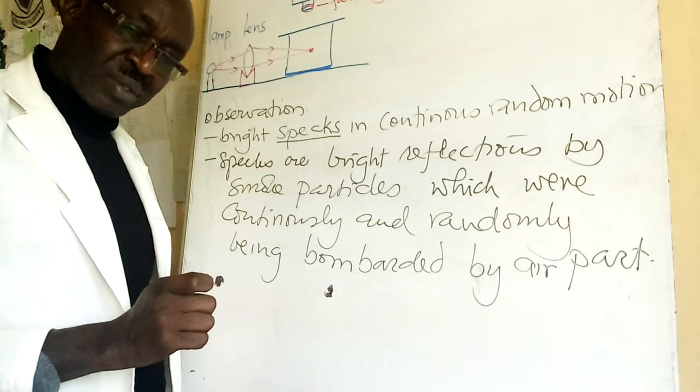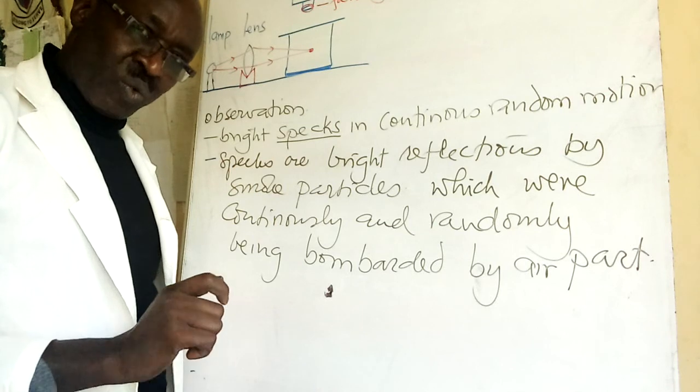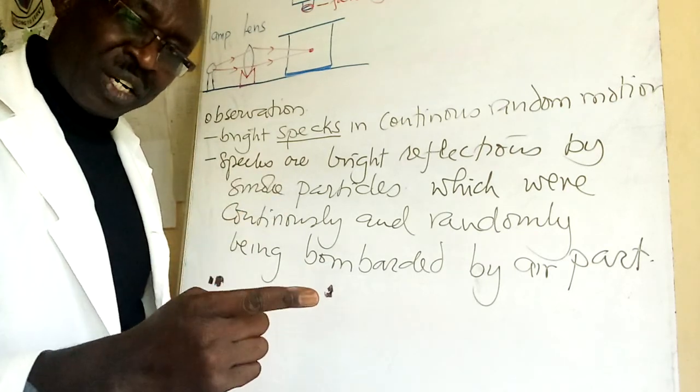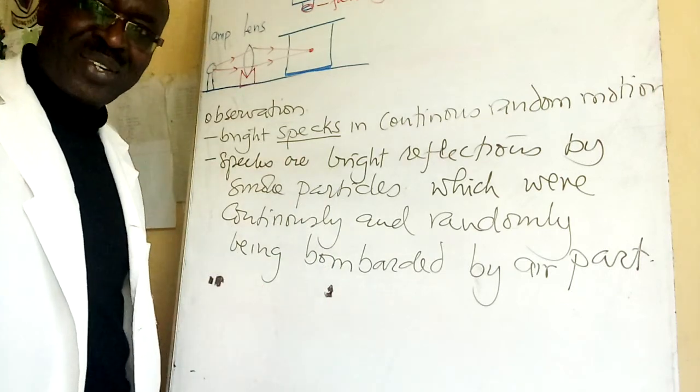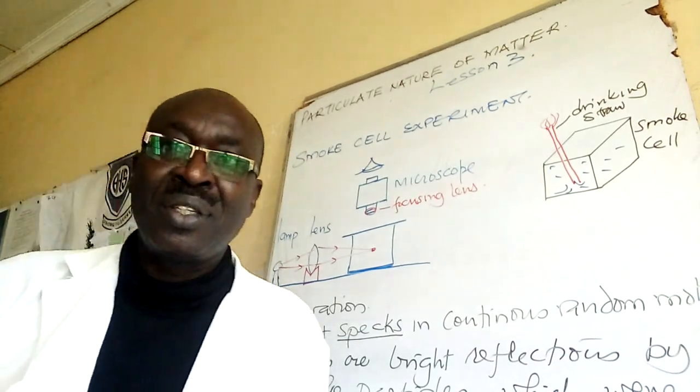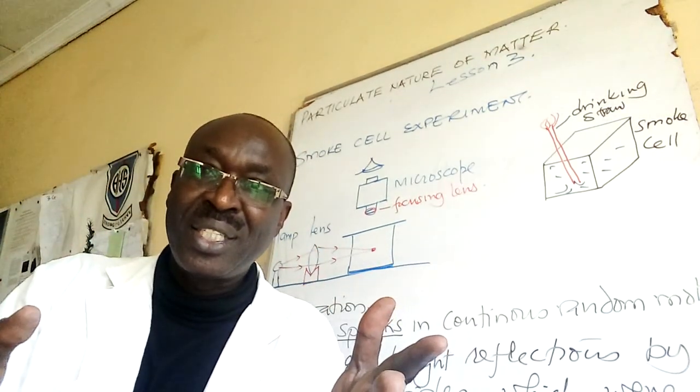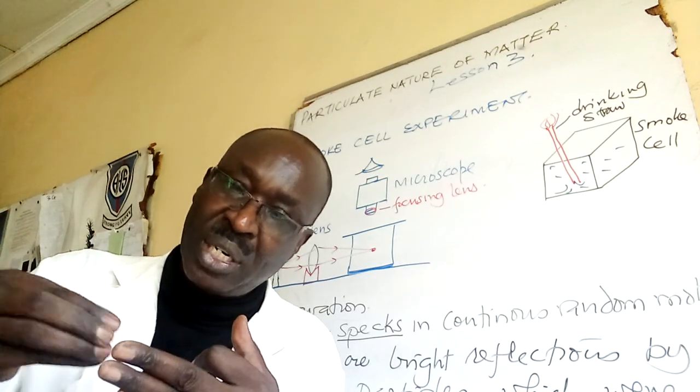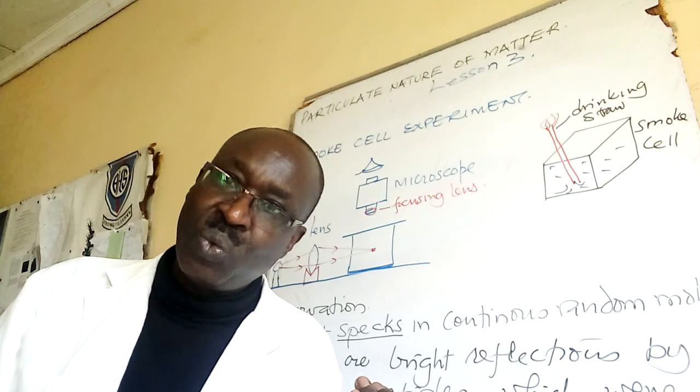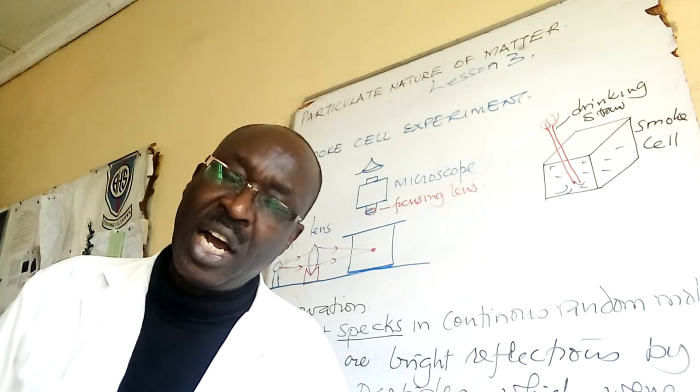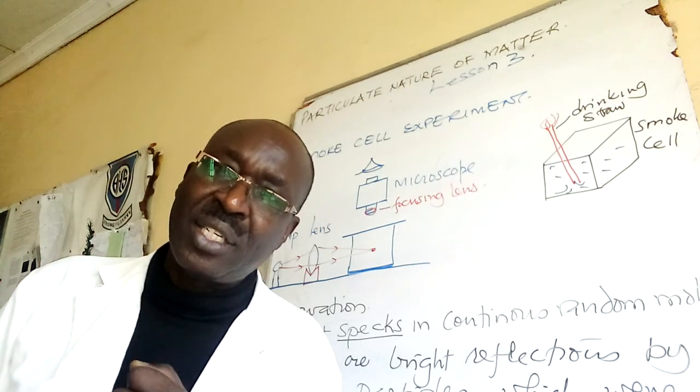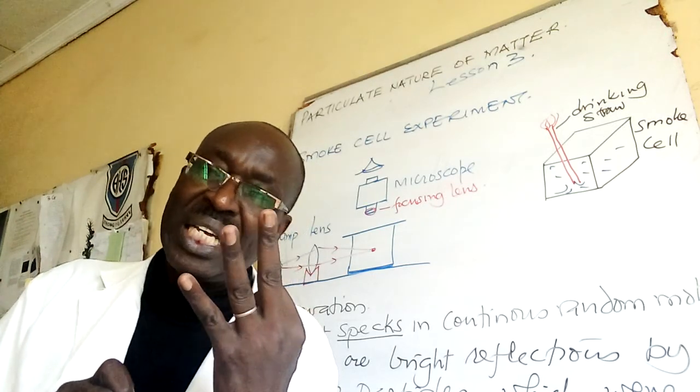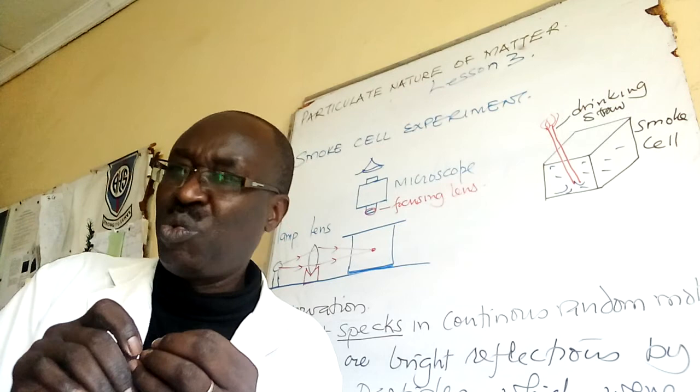Matter is in three states: solid, liquid, gas. We are studying what makes them up, what constitute them, the nature of particles in them. First is that matter is made up of particles. We used three examples. Using the paper, you just cut it to small pieces until you go on and on. And then we used potassium permanganate solution.